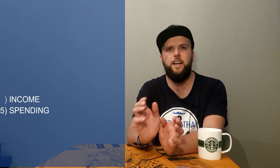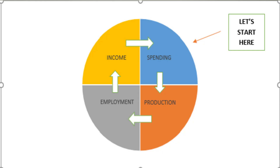Now, how do these components link together? Let's consider a negative scenario: something stops people from spending money — perhaps a recession or uncertainty about the future. If spending goes down, there is less demand for goods and services, so production will go down in the economy. Producers will have to decrease output.